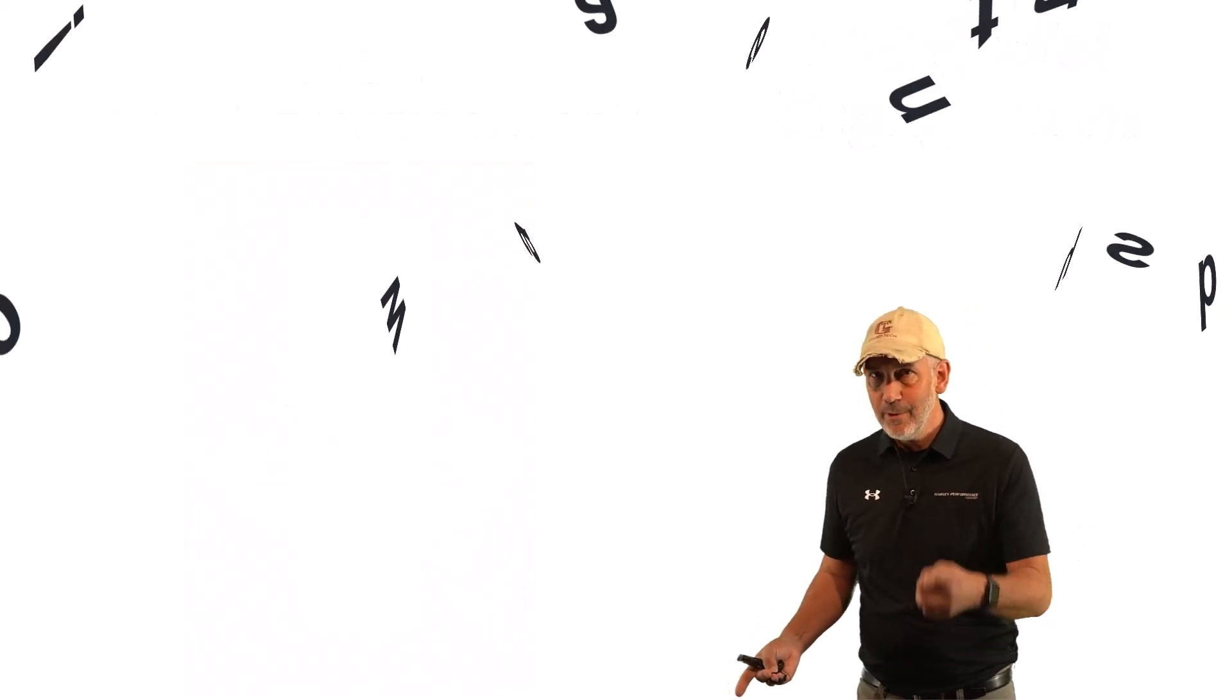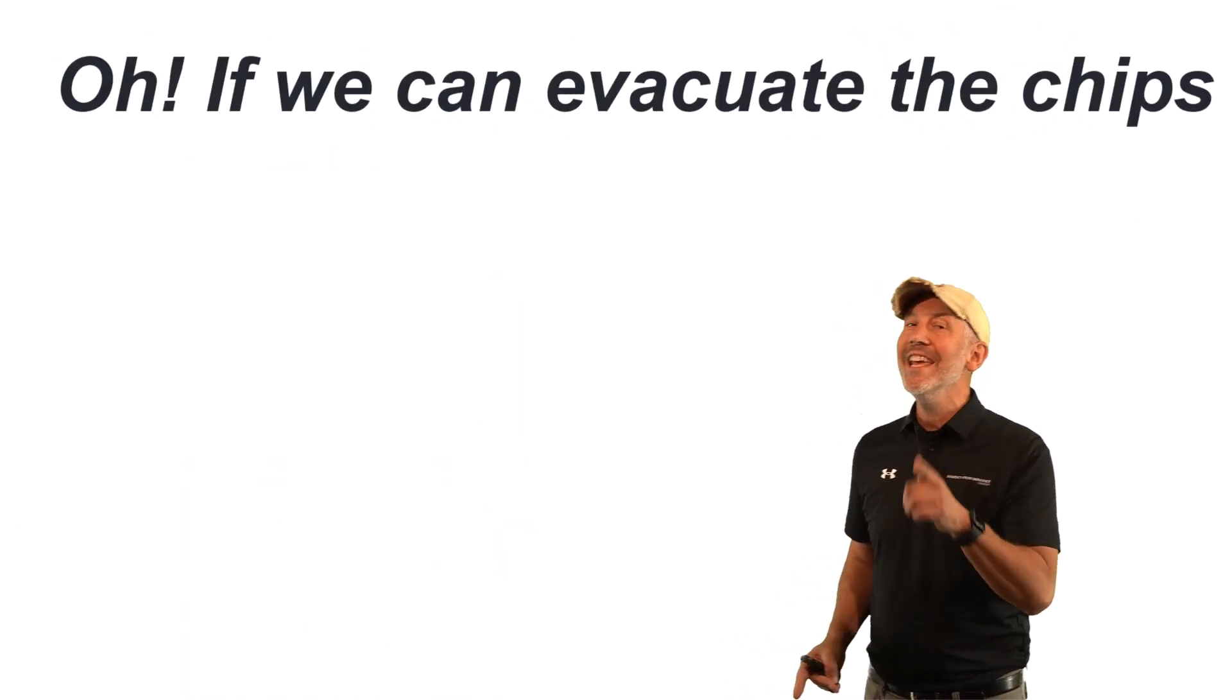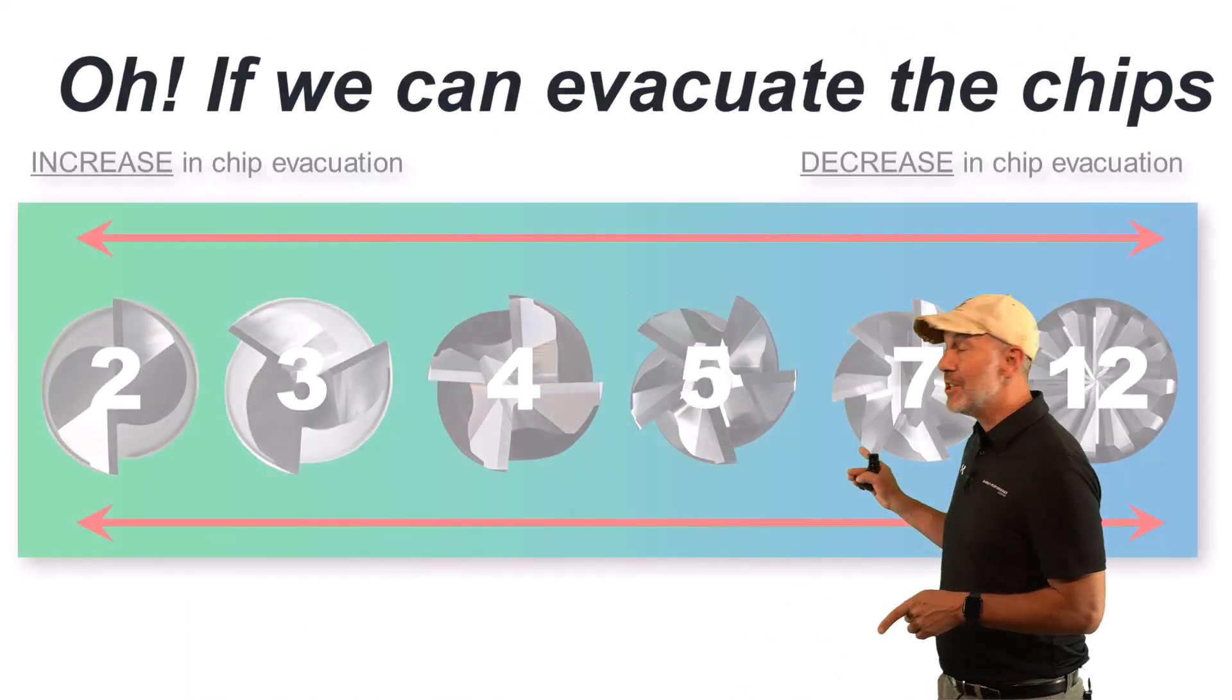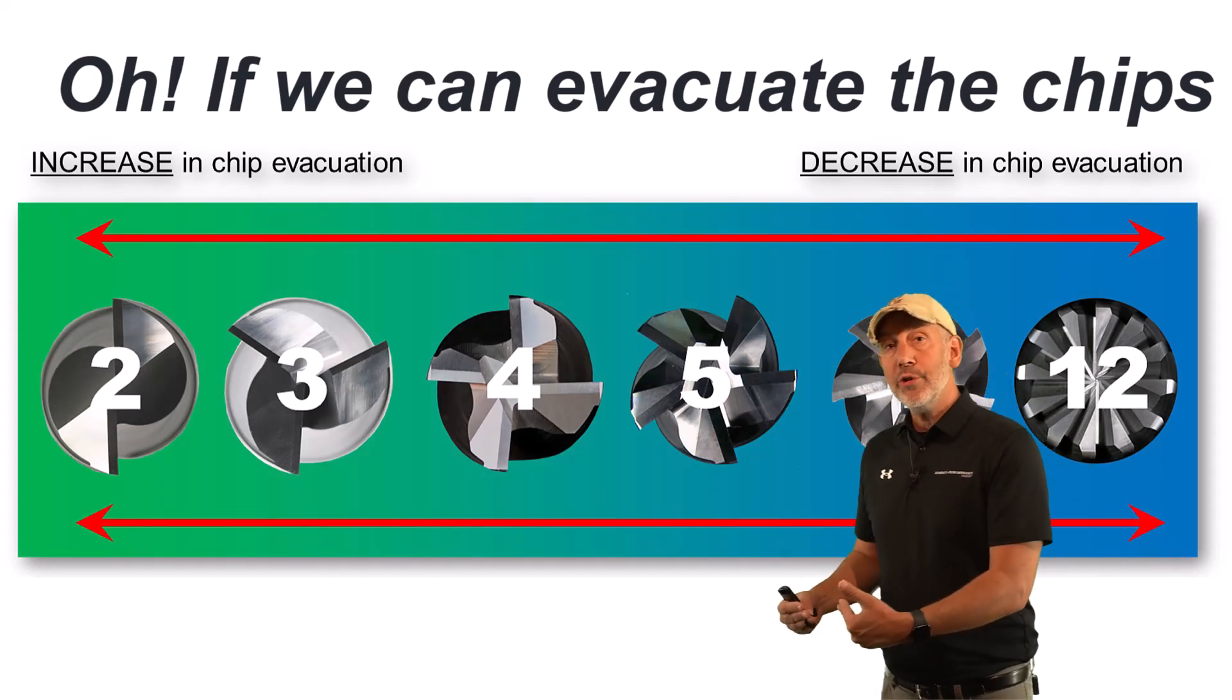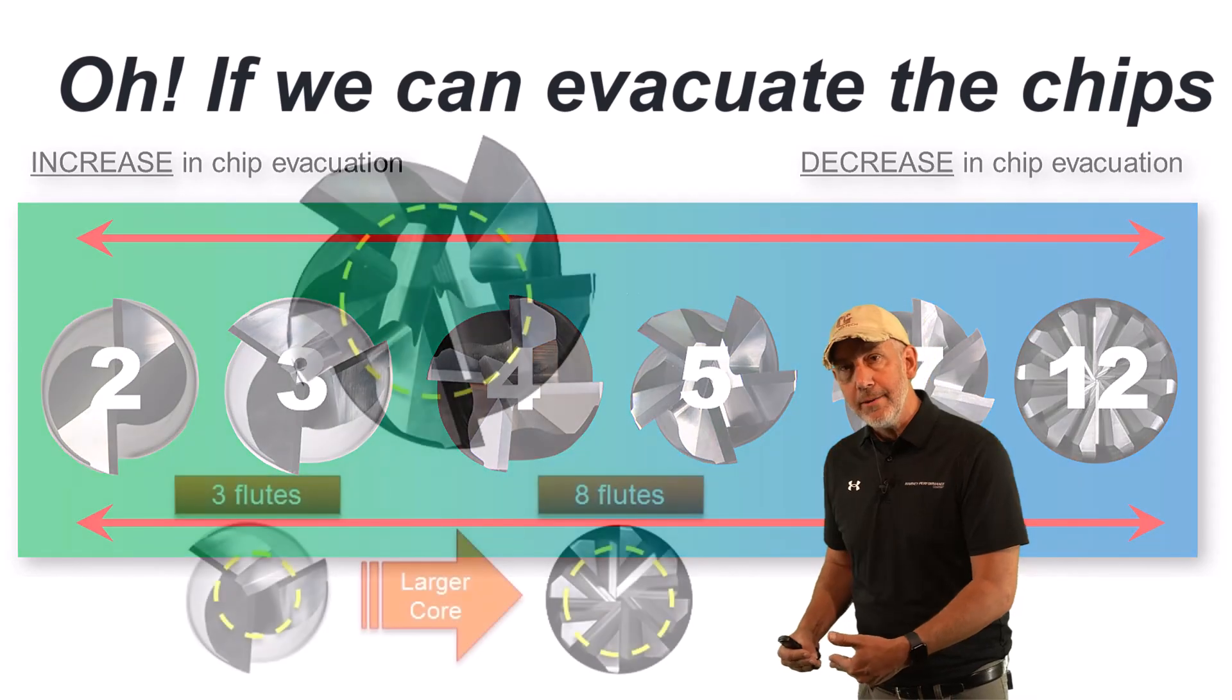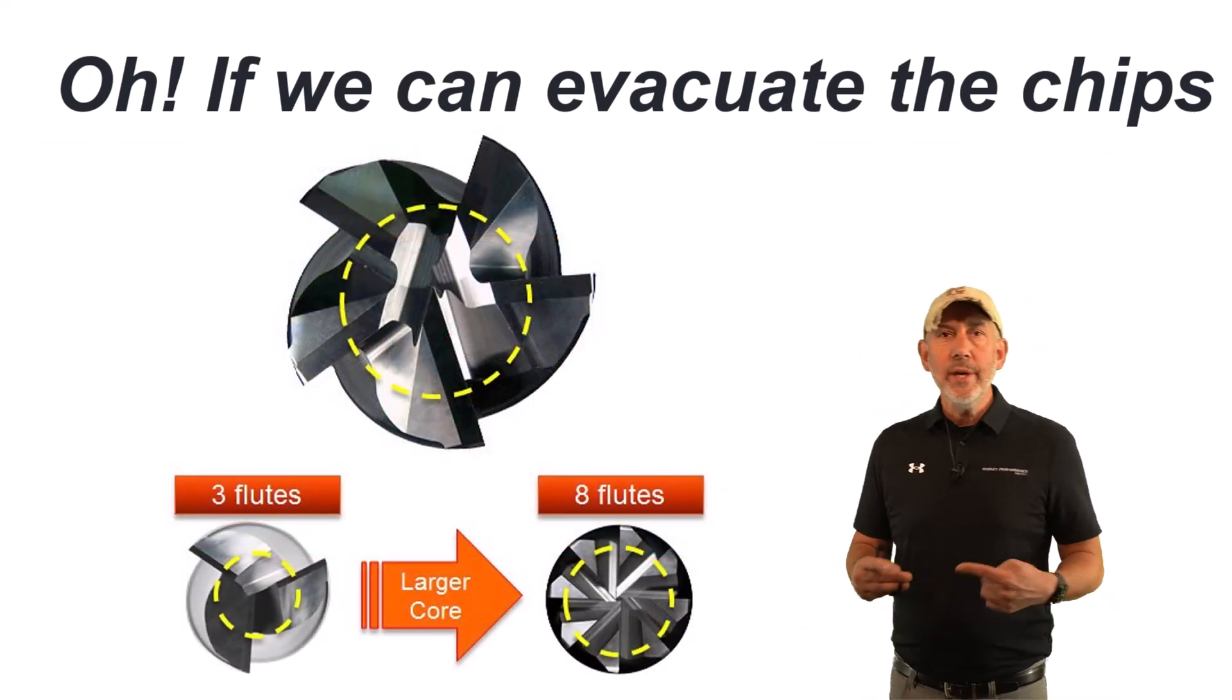And if we can get the chips out, if we can get the chips, I'm just telling you, if we can get those chips out, guess what? We can add more flutes. That's for another segment. But we can add more flutes. We can add more strength. So how do we control that angle of engagement? Toolpath. Toolpath controls it. That's what these softwares do. This is what HEM is. That's why you have to have a specific software that controls the angle of engagement.